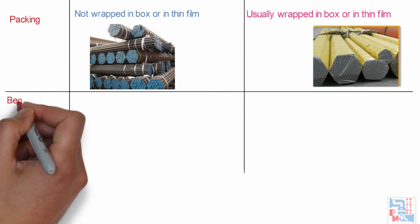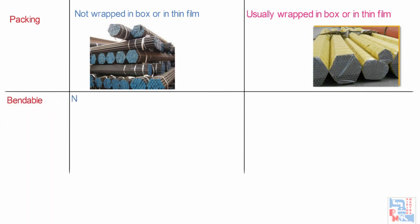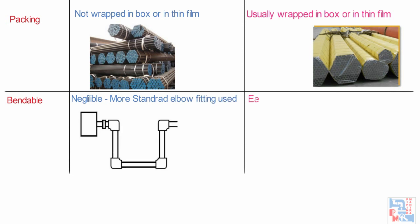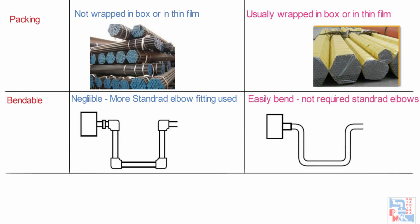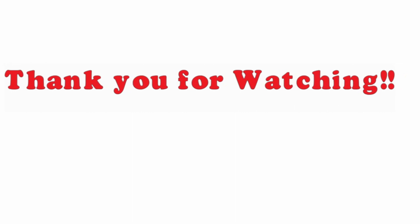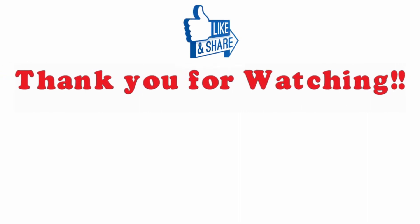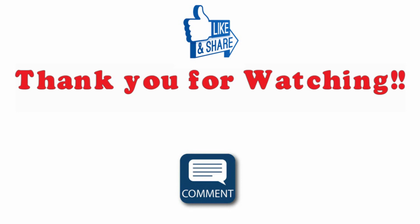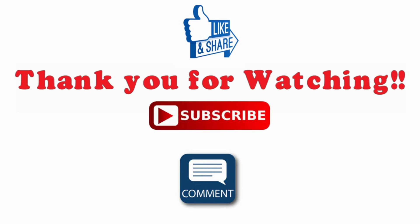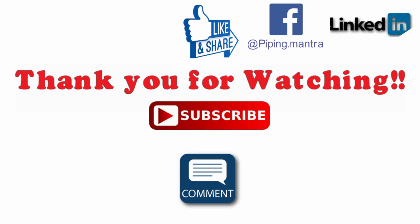Now let's see the difference on the bendability front. Pipes are less bendable and more standard fittings are required, whereas tubes are more bendable — tubes can be bent to a desired degree with fewer fittings required. That is it for today's video. We will come back soon with another interesting topic, so stay tuned. If you have any queries or doubts, please write to us in the comment section below. Also, please like, share, and subscribe. Till next time, bye-bye, take care.